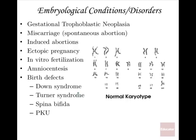Embryological conditions and disorders: Gestational Trophoblastic Neoplasia (GTN) — the trophoblast, which grows rapidly, invades maternal tissues, and avoids immune detection, mimics cancer cells. Rarely, the trophoblastic region will act like cancer and start invading maternal tissues. If detected early, the tissue must be removed quickly and chemotherapy administered, meaning the baby will not survive.